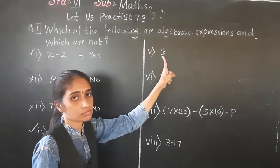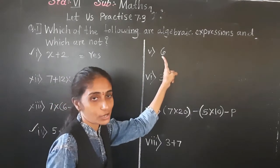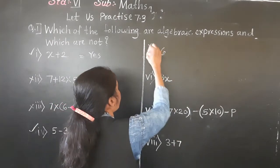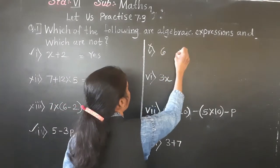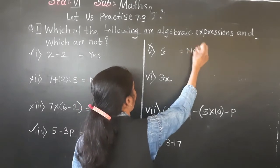Example 5: just the number 6. Here only a constant is given — no variable. So this is not an algebraic expression.